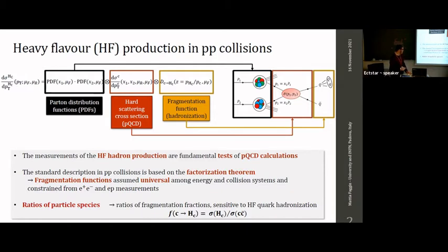In this approach, the fragmentation functions are assumed to be universal across collision systems and energies, and are usually constrained from measurements done in e+e− and electron-proton collisions. To be sensitive to the hadronization of the charm quark, we try to measure the ratios of particle species, which correspond to ratios of fragmentation fractions for different hadrons.